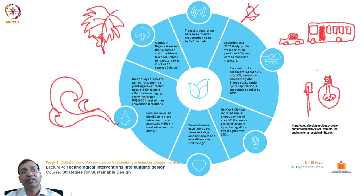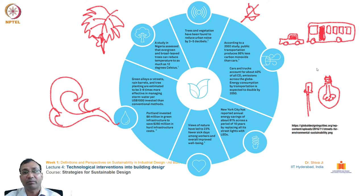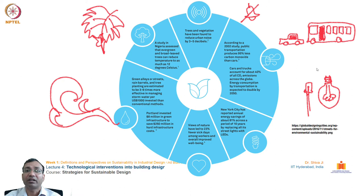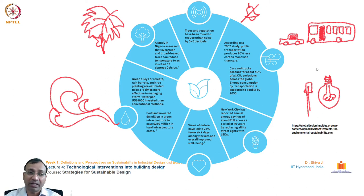New York City has reported annual energy savings of about 81% across 10 years by replacing all its street lights with LED. This is a proven fact. In the last decade, there has been a significant push from the Government of India and state governments to replace incandescent bulbs with LCD or LED bulbs. These electrical devices have been highly subsidized and distributed to every household through rationing at subsidized rates to replace power-hungry lamps with power-saving ones.